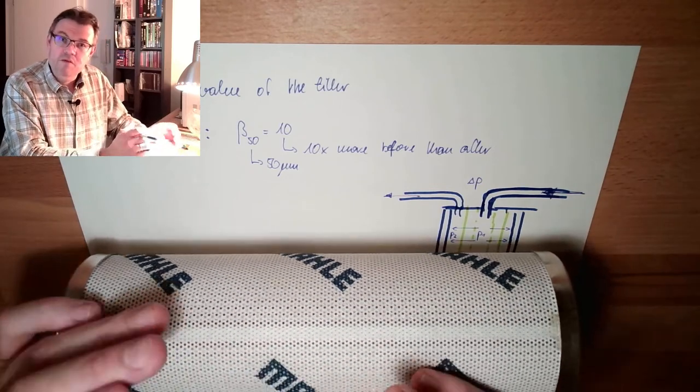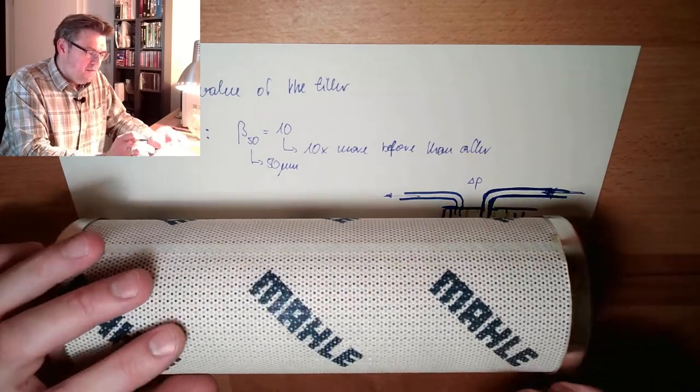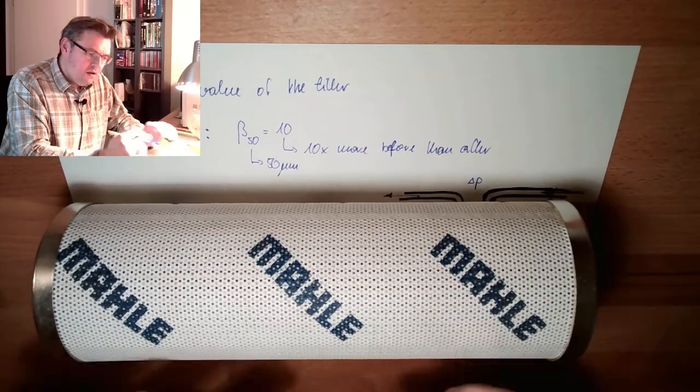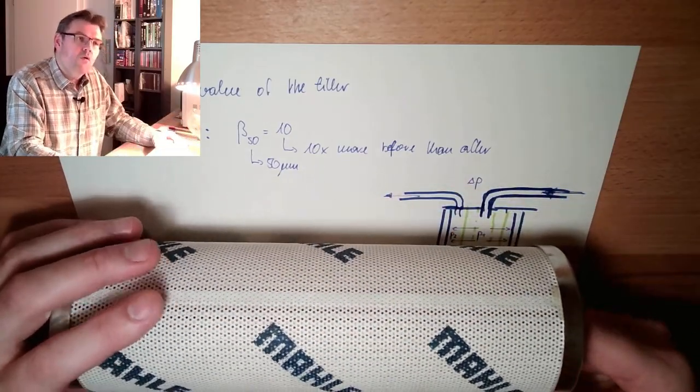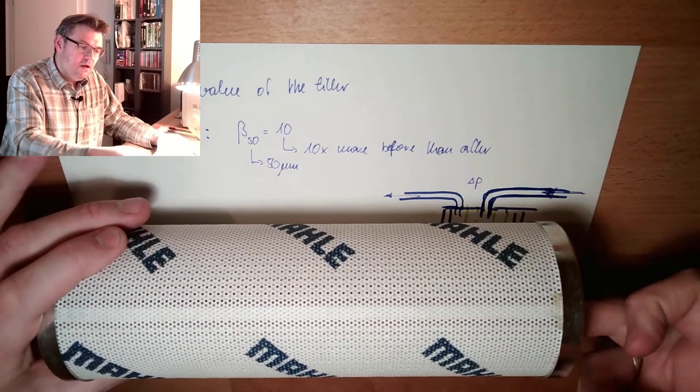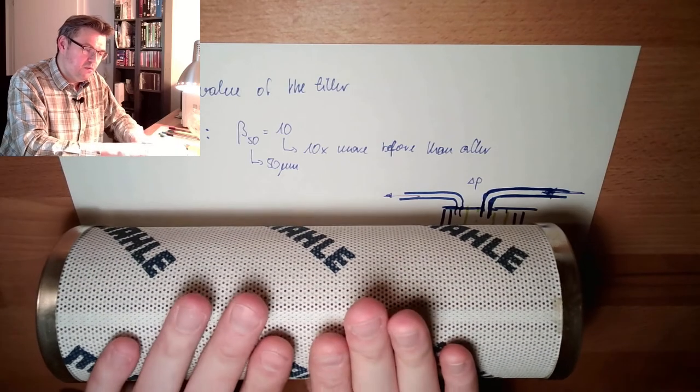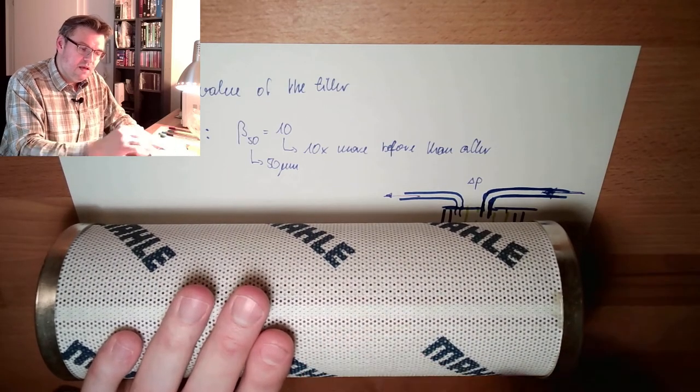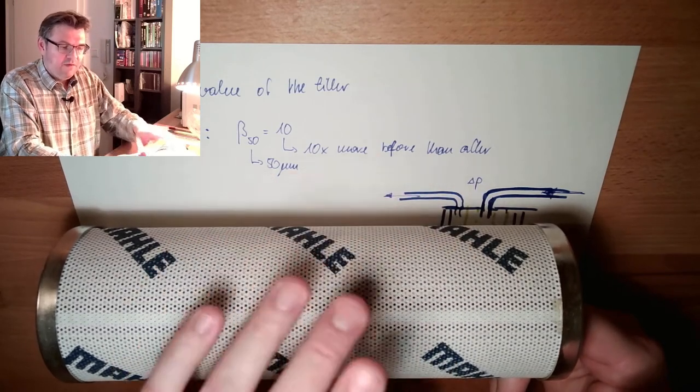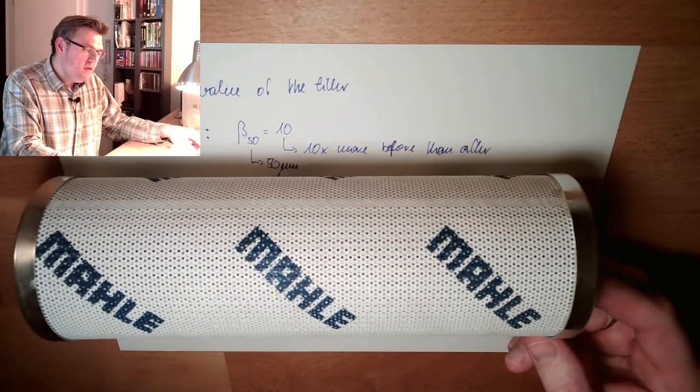If you want to get different flows through a filter, it doesn't make sense to use a huge filter for small flows. You can use a small filter. But if you have big flows, big servomotors, big cylinders somewhere, then you have to use also a big filter, that it is able to handle the flow. Each filter element has a certain allowed flow and a certain allowed pressure difference.